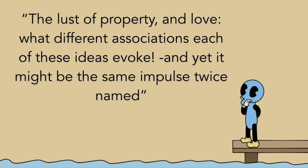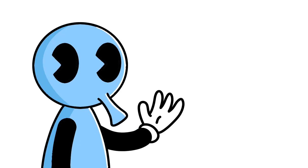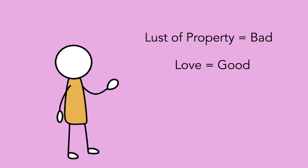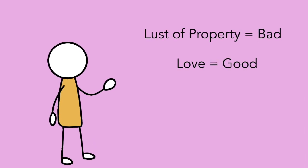I'll let you be the judge. So Nietzsche's first sentences of this piece also sum it up pretty nicely. The lust of property and love. What different associations each of these ideas evoke. And yet, it might be the same impulse twice named. So again, let's think about how society would view these two things. I know it's super elementary and reductionist to label large concepts such as these as either good or bad, but generally speaking, if you were to ask a man on the street, they'd say that lust of property is bad and that love is good.